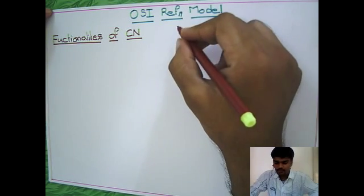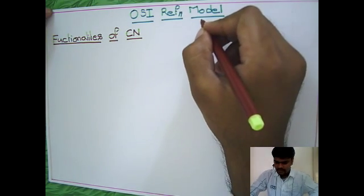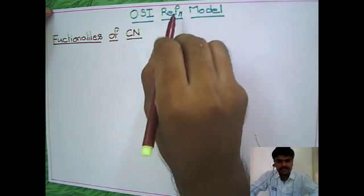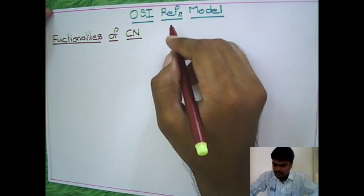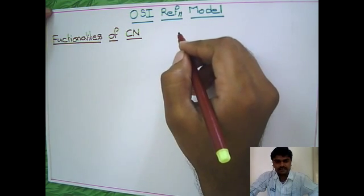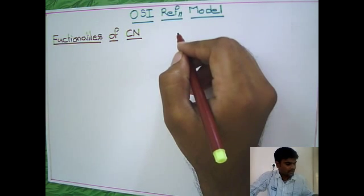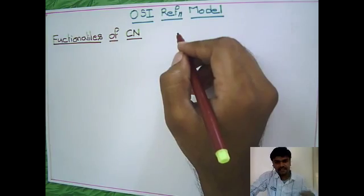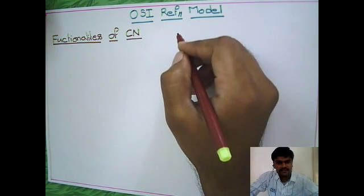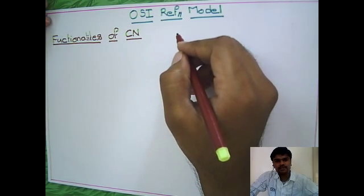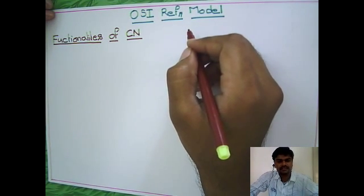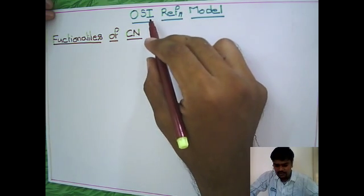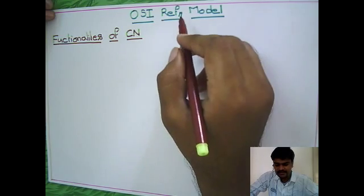Our next chapter is the OSI Reference Model. As the name mentions, it's actually not implementable. Whenever you want to develop a new network technology like TCP/IP, ATM, or ISDN - these are all existing computer network technologies - suppose you want to develop a new computer network technology, you need to know what things you have to provide. That's why you need to refer to this OSI model, and that's why it's called the OSI Reference Model.